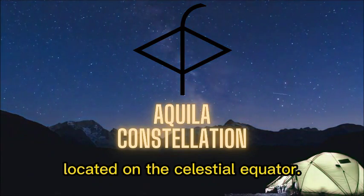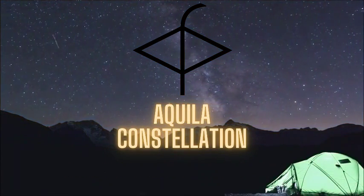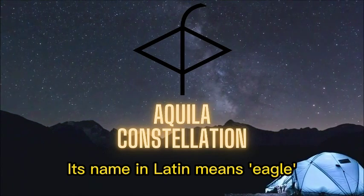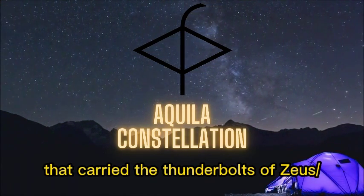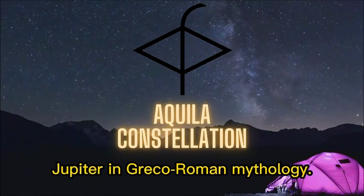Aquila is a constellation located on the celestial equator. Its name in Latin means eagle and represents the bird that carried the thunderbolts of Zeus-Jupiter in Greco-Roman mythology.